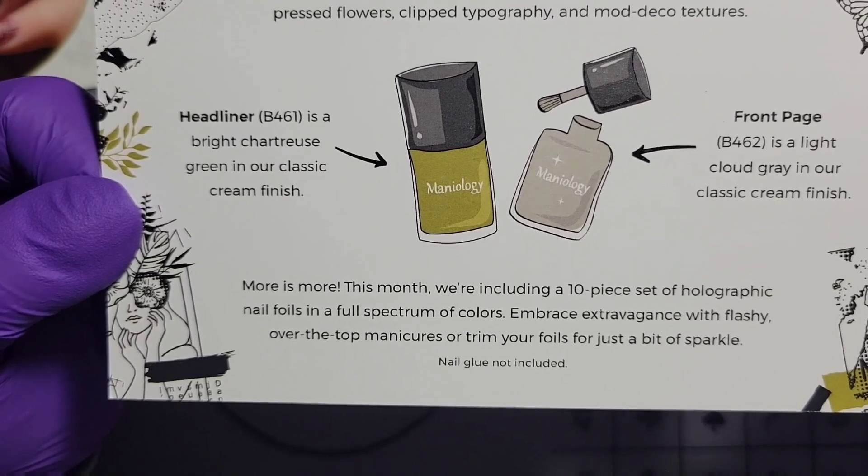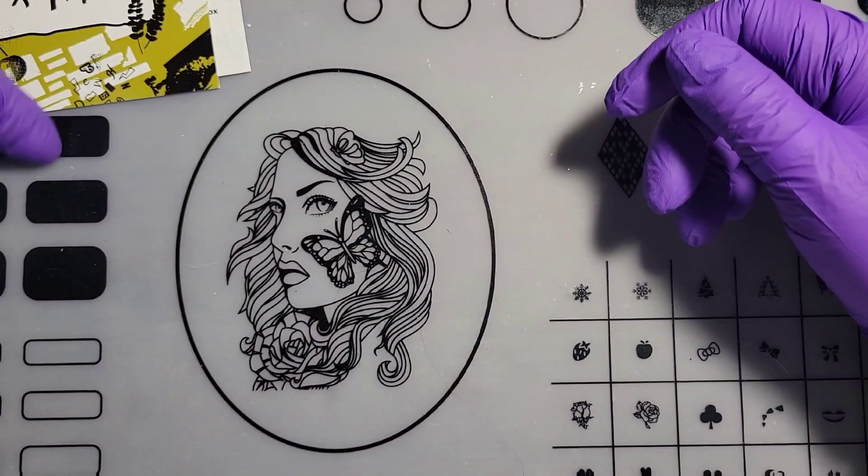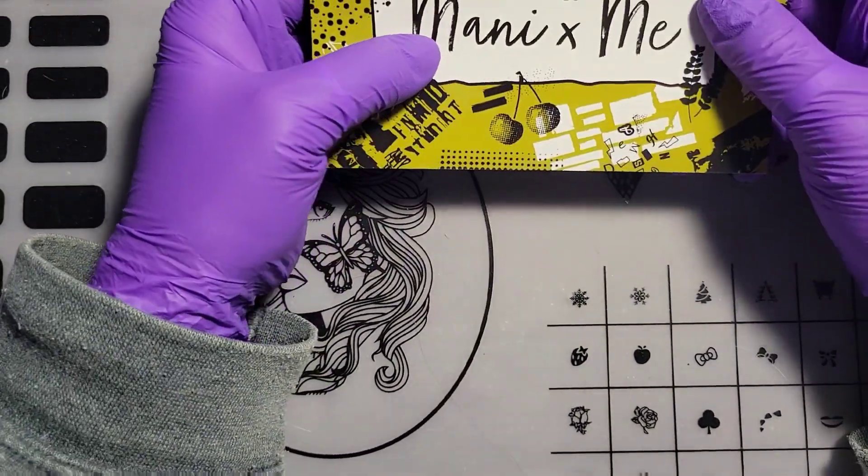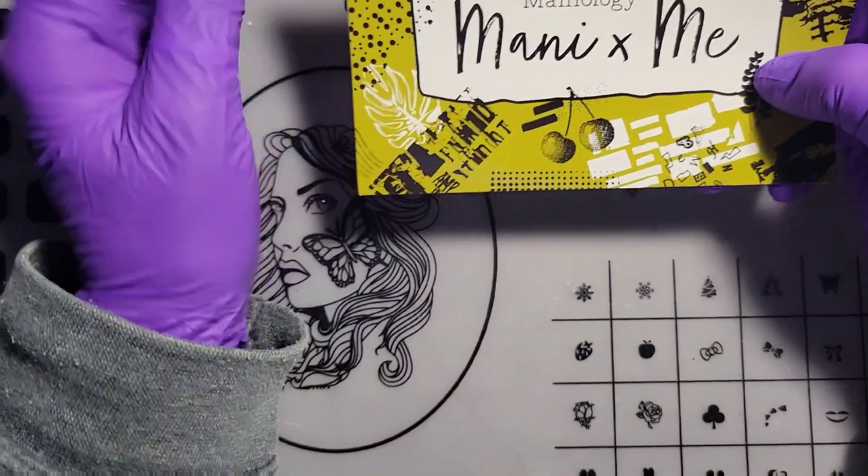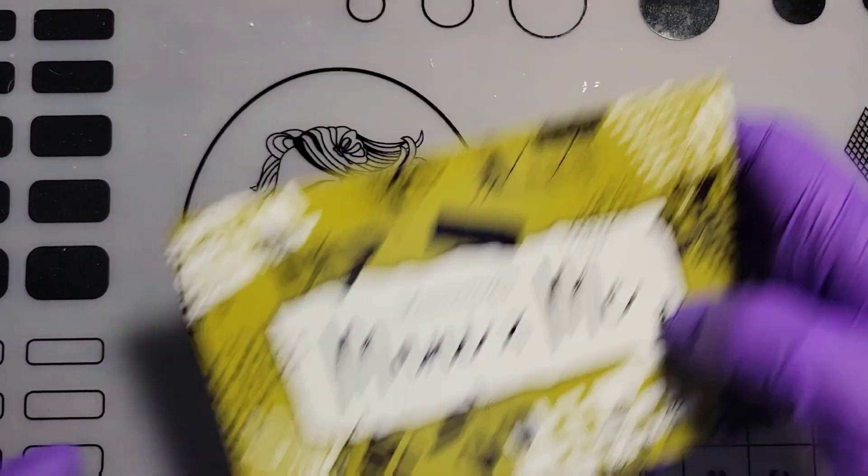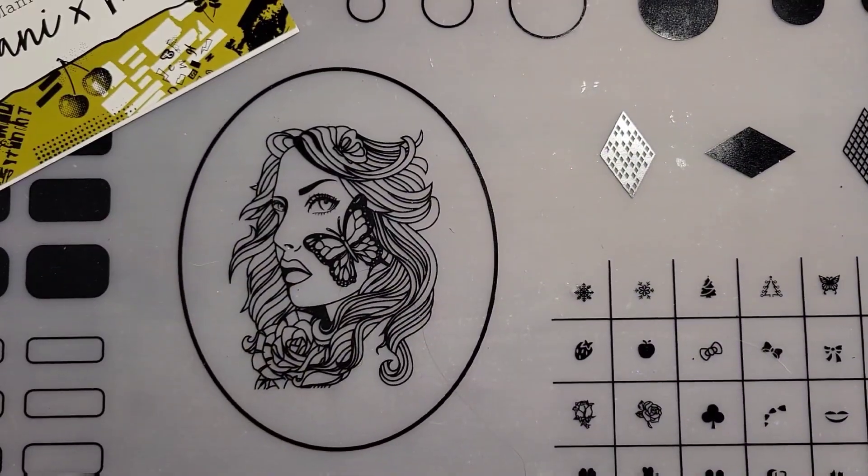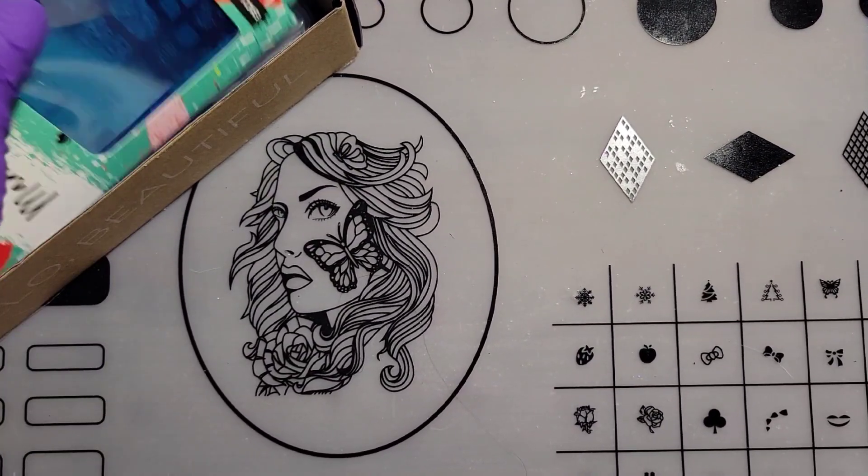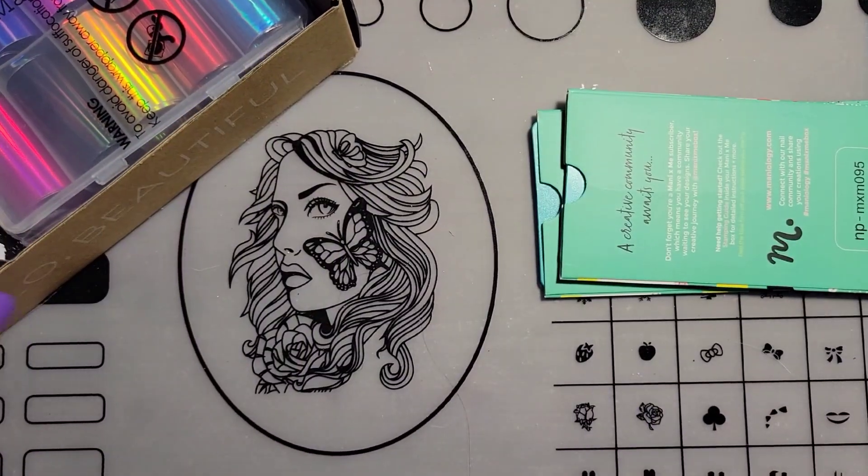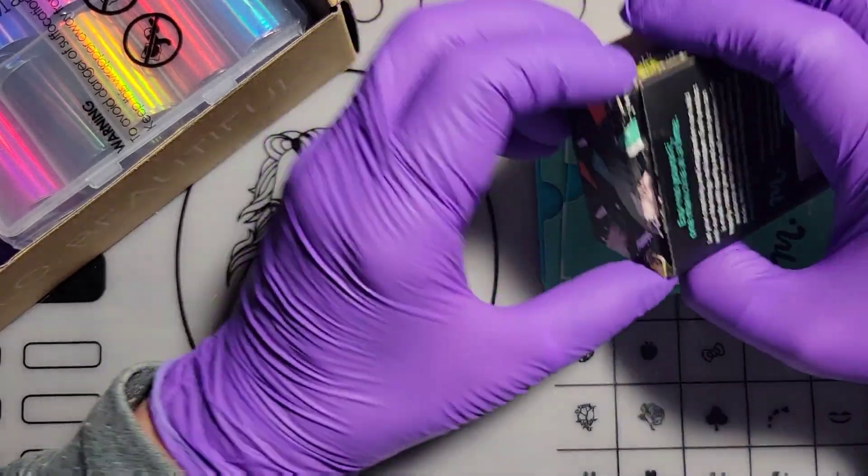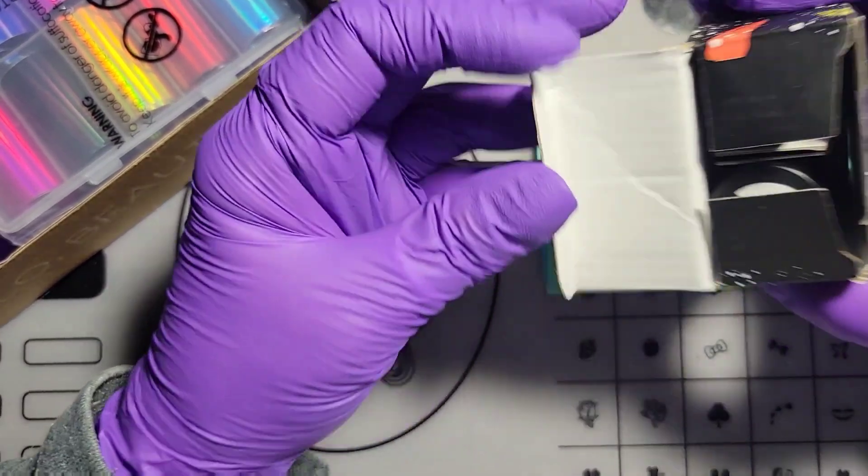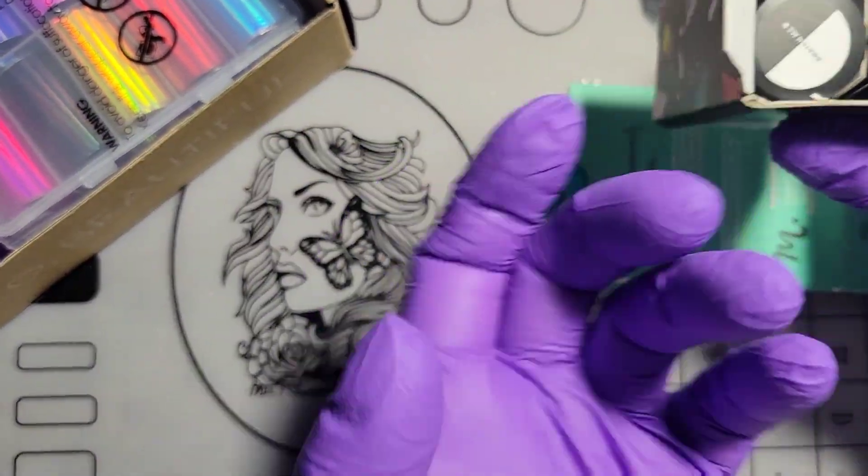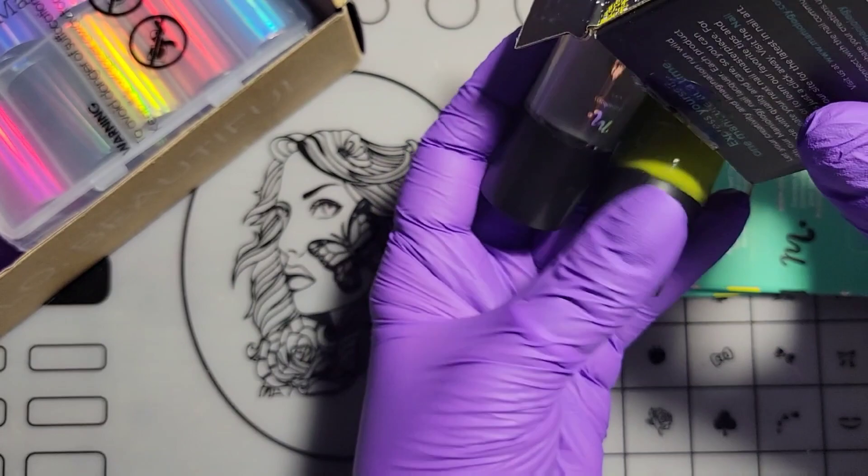I watched the Mani and Me, the two girls from Maniology each month they do like a spoiler kind of thing. Each month they come out and they show you what's in the box, how to use everything, inspiration for the polishes and the stamping plates.